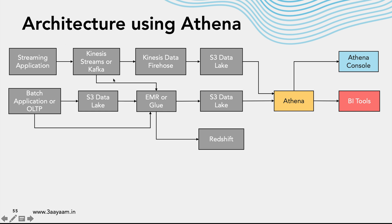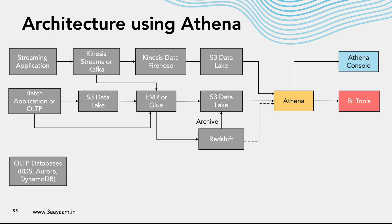Once data is moved to S3, we allow Athena to read it using SQL. From EMR we can also send data to Redshift, or we can get streaming data directly from Kinesis or Kafka using Redshift Streaming Ingestion with materialized views. Data is stored historically in Redshift, and as a best practice we archive the data to S3. The moment data is moved to S3, we can access it using Athena.